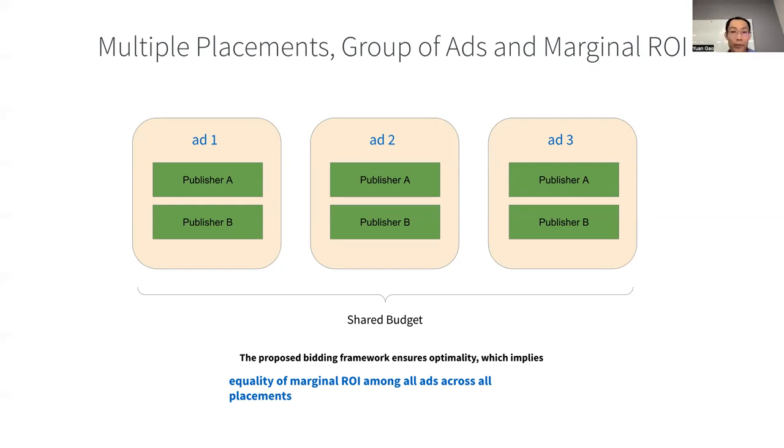By following the optimal bidding strategy in our framework, it automatically ensures optimality in the total number of results, and the final budget allocation across the placements is an outcome of optimal bidding. Similar arguments apply to the joint optimization of a group of ads. We also proved that under the optimal bidding strategy, the marginal ROI among all the ads across all the placements are the same, which is a necessary condition for optimality.